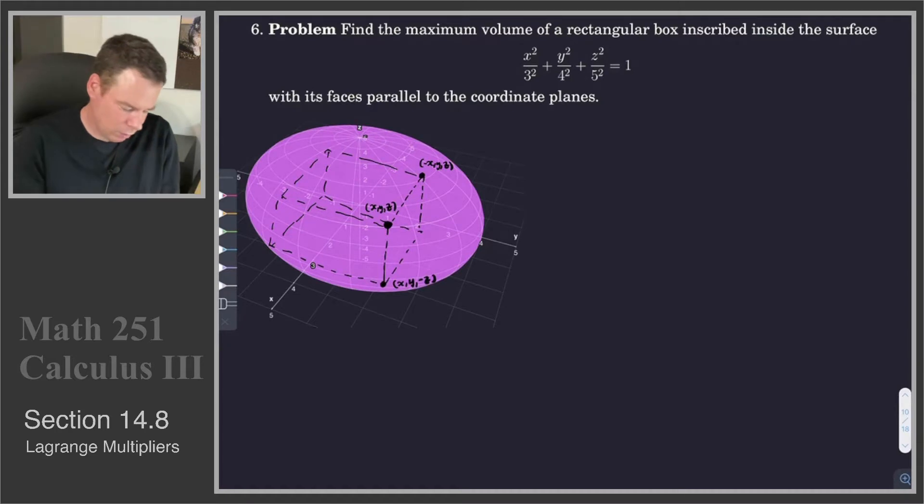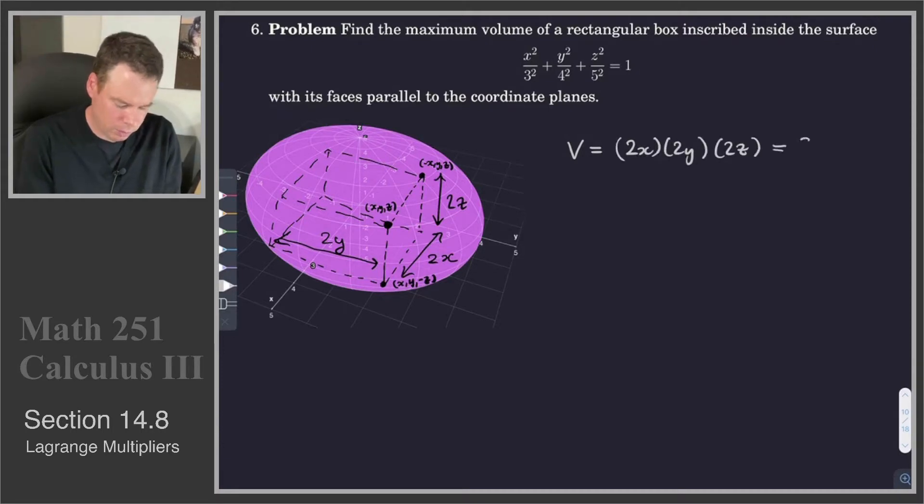So to compute the volume, we just recognize that it would have dimension of 2x in that direction, it would be 2z in this direction, and it would be a width of 2y. So our volume is going to be 2x times 2y times 2z, or in other words, 8xyz.